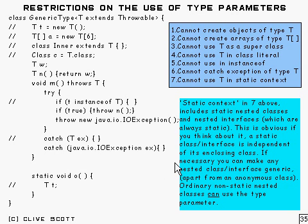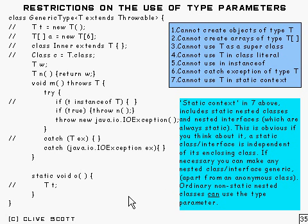If it's necessary, any nested class or interface can be made generic — that's not a problem. Apart from anonymous classes, which because they haven't got a name, you can't make them generic. And for ordinary non-static classes, of course, they can use the type parameter.